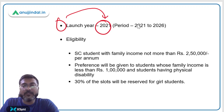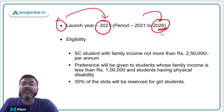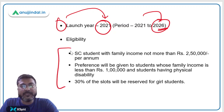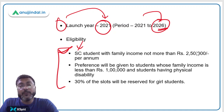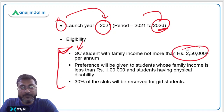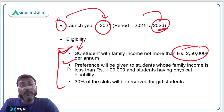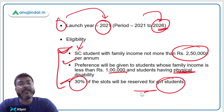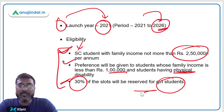The scheme runs from 2021 to 2026. Eligibility requires students to be from the SC category with family income not more than Rs. 2.5 lakh per annum. Preference is given to students with family income below Rs. 1 lakh and those with physical disability. One-third — 30% — of the slots are reserved for girl students.